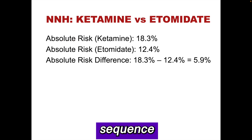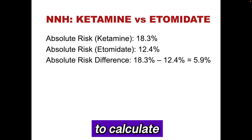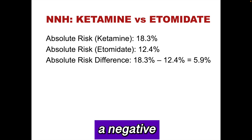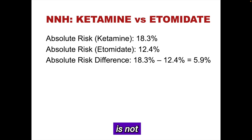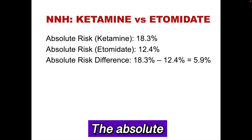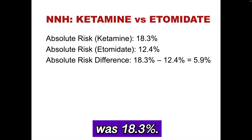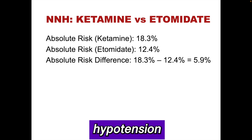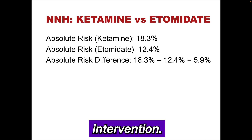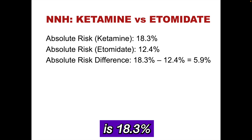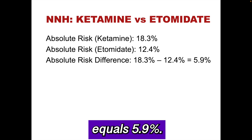We will use a ketamine study for rapid sequence intubation to calculate a number needed to harm. The study outcome is a negative outcome — hypotension — so we will be calculating a number needed to harm rather than a number needed to treat. A number needed to harm should not be calculated when the risk difference is not statistically significant. The absolute risk of hypotension in the ketamine group was 18.3%, and in the etomidate group was 12.4%. In this example, ketamine is the control and etomidate is the intervention. The absolute risk difference is 18.3% minus 12.4%, which equals 5.9%.